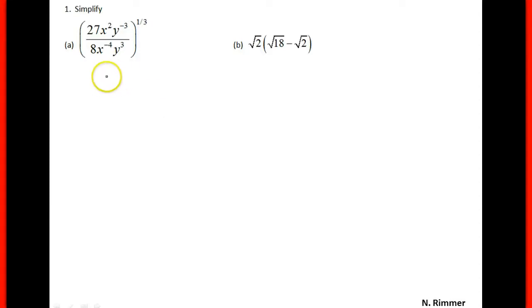Okay, the first question is an exponential question. We'll take the 27x squared and the 8y cubed. These negative exponents, we'll flip them and put them to the other side, where we have x to the 4th in the numerator and y cubed in the denominator.